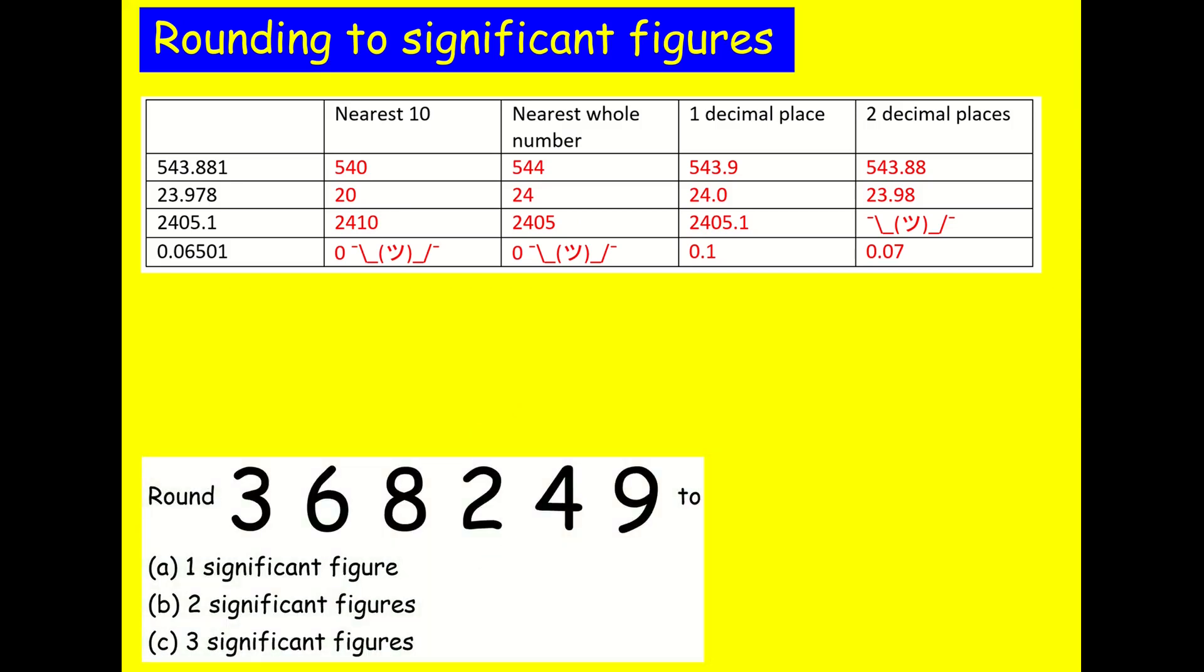Okay, so I've got a number here, 368,249. And I'm asking to round it to one significant figure, two significant figures and three significant figures. The first thing we need to do is work out what do I mean by a significant figure. Basically, the first significant figure is the first digit in the number that is of importance. And in this case, it's this one here. This is my first significant figure. It basically gives me the size of the number, doesn't it?